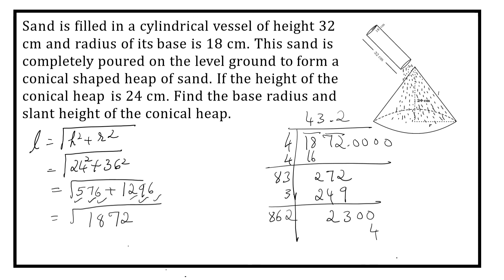So here 2. 2, 2s are 4. 2, 6s are 12. 2, 8s are 16, 170. This is enough. So square root of 1872 is 43.2 cm.